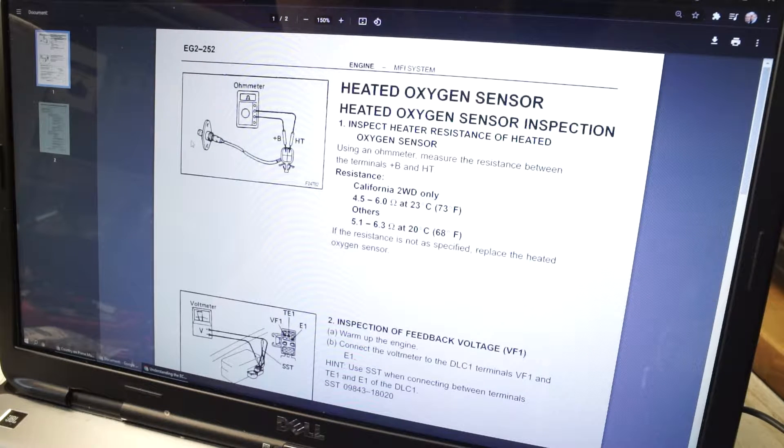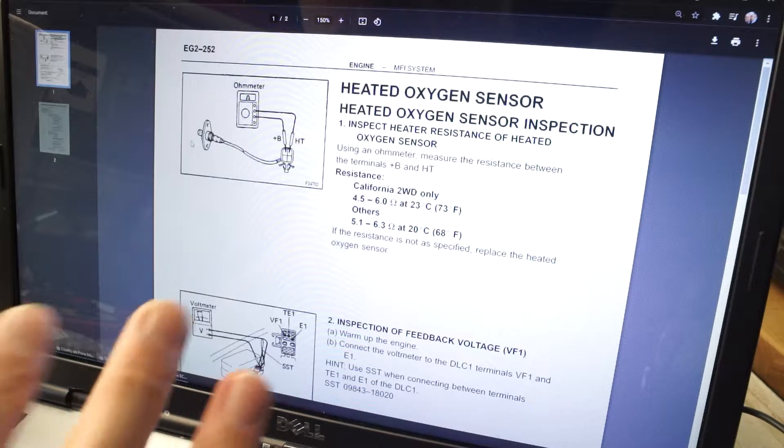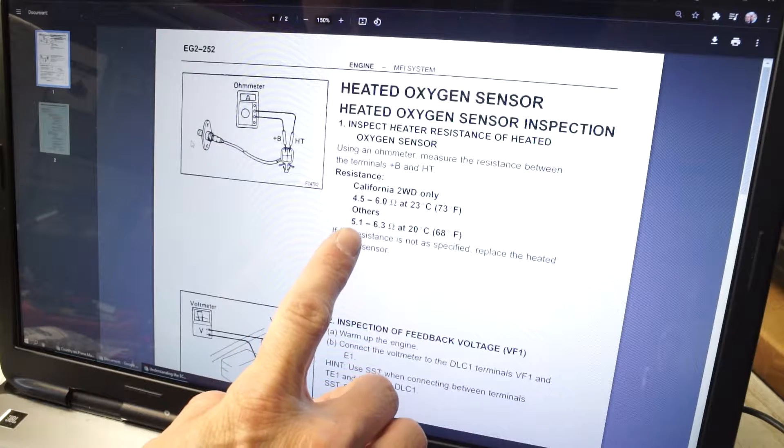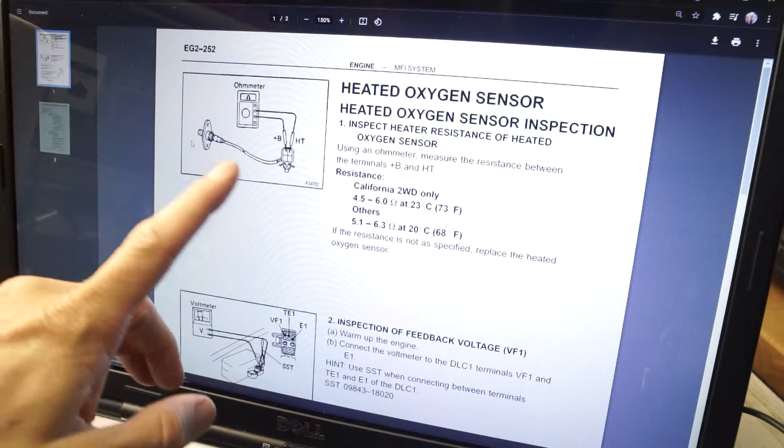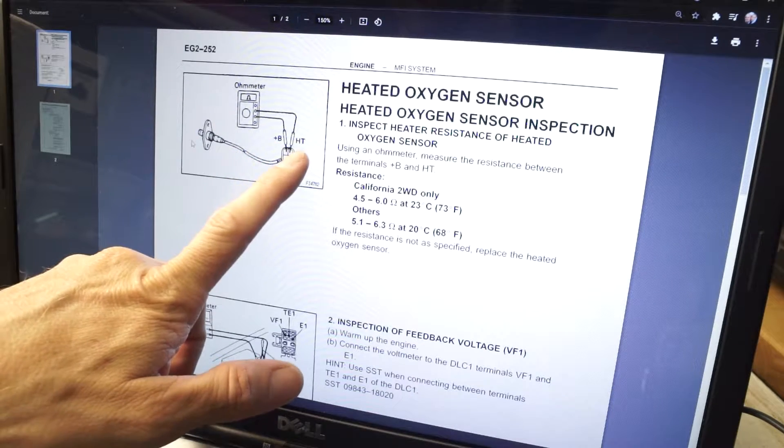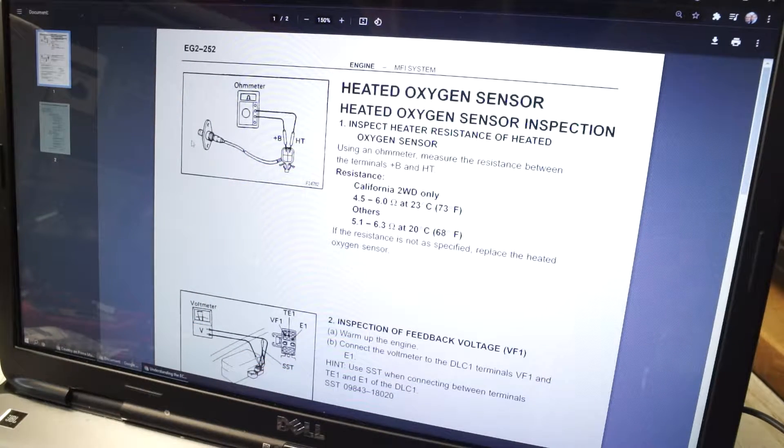First thing we should check is probably the oxygen sensor, make sure it's working right. According to the service manual, the resistance on the heater should be between 5.1 and 6.3 ohms. Checking between plus B and HT. Let's go check and see what it's at.